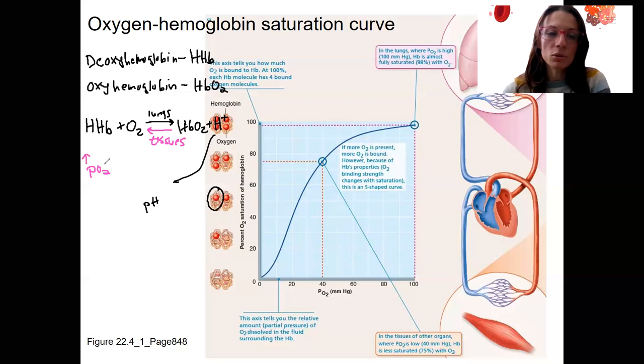High PO2. Of course, I should have done this the other way. Let's do low PO2 here, because that's going to push us this direction. High PO2 is going to push us this direction, and that's our lungs. That's our tissues. So it all makes sense.